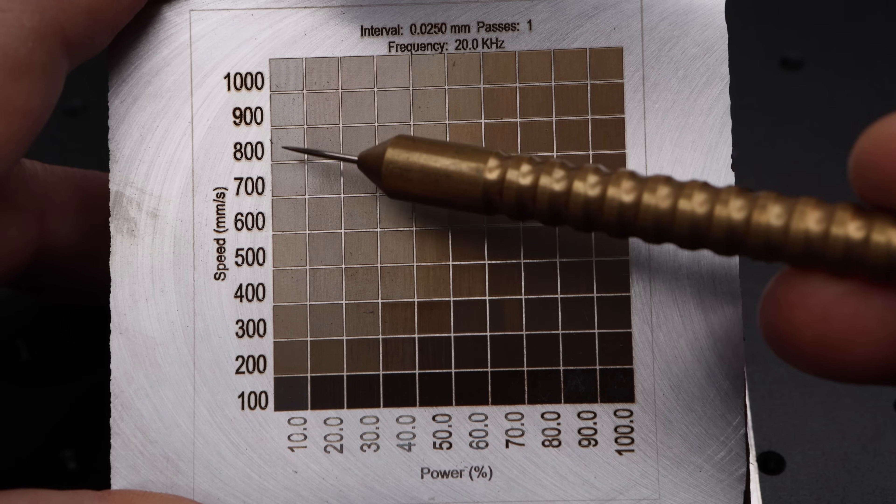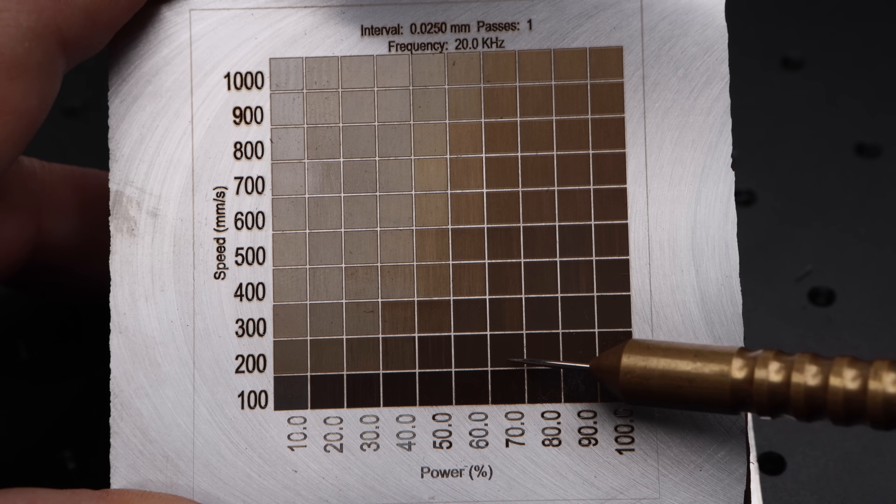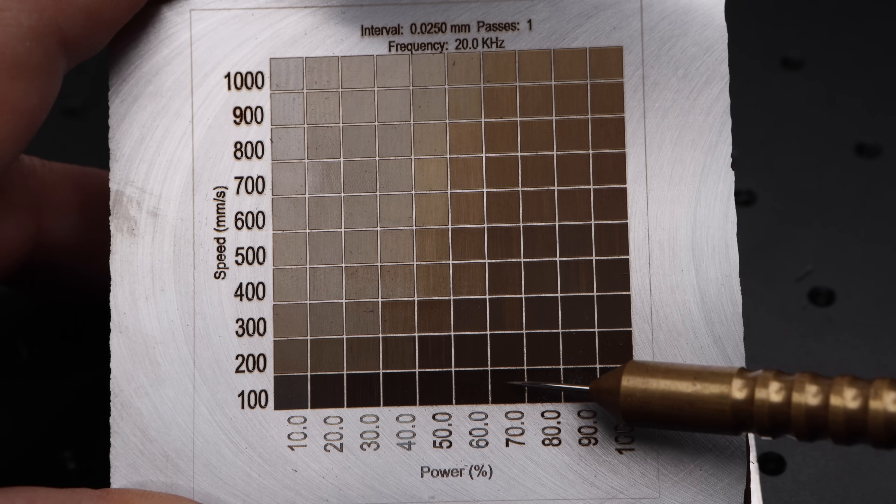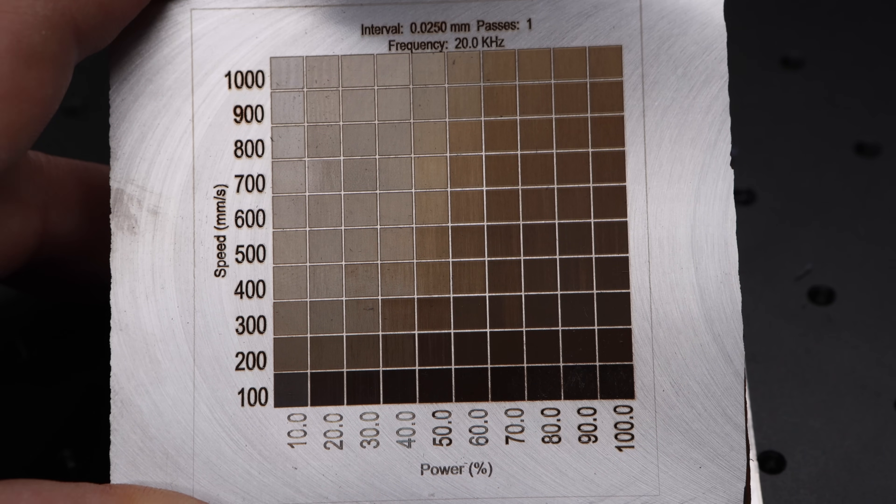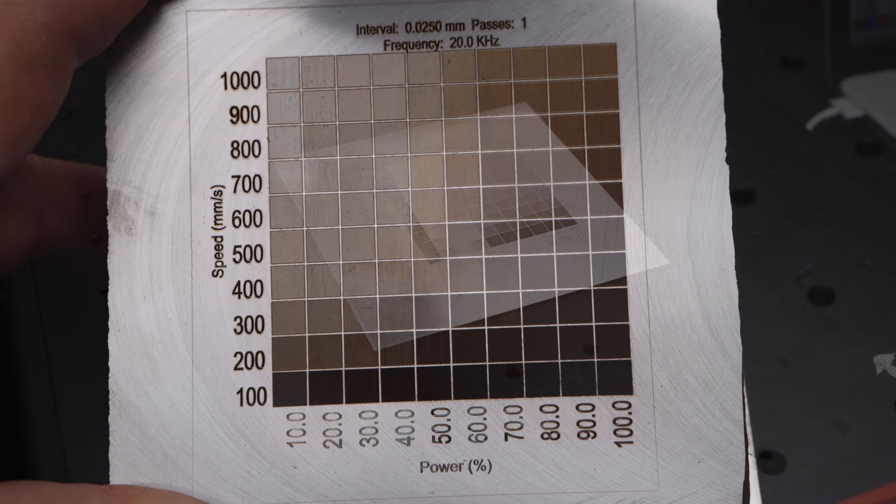So it's easy to see here that using these matrices is a great way of dialing your settings in for each of the materials that you're going to be using. On mild steel here I like the look of these darker tones so I'm going to be going for something in between 100 and 200 millimeters per second, probably 150 millimeters and about 60 or 70 percent power.